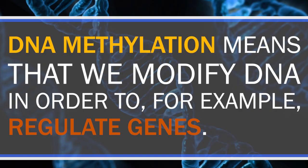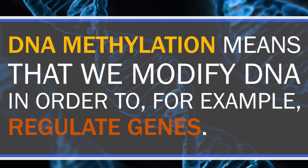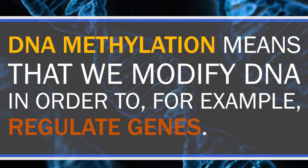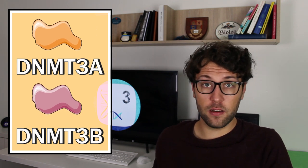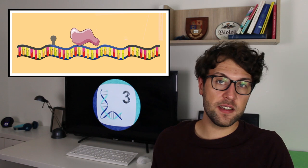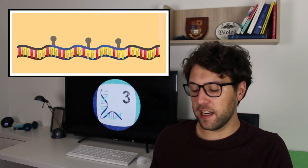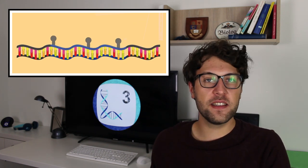That's actually the first time we talk about DNA methylation on this channel. DNA methylation means that we modify the DNA in order to, for example, regulate genes. Broadly speaking, it works like this: if a cell wants to regulate a gene, it produces the proteins DNMT3A or DNMT3B. These proteins then come to the gene of interest and add methyl groups to cytosine, which is one of the four bases of DNA. So this is one of the mechanisms for which genes can be regulated.